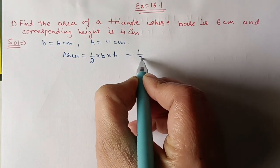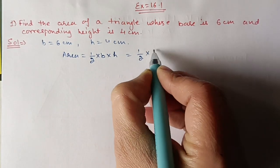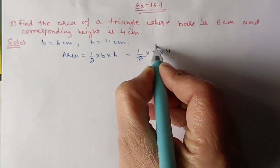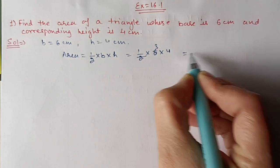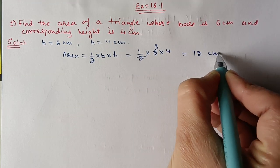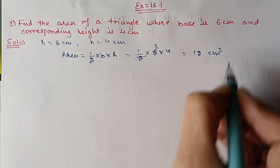Area = (1/2) × 6 × 4. We can cancel: 2 and 4 give 2, so 6 × 2 = 12. Therefore, the area is 12 cm².